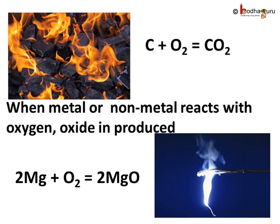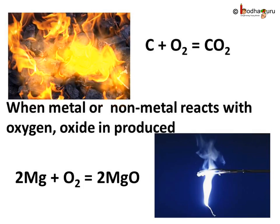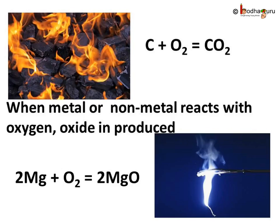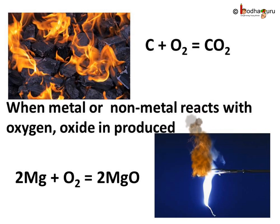Also, when we burn a piece of charcoal, carbon dioxide is produced. So carbon plus oxygen gives carbon dioxide: C + O₂ = CO₂. If we burn a magnesium wire in air, magnesium oxide is produced. Magnesium plus oxygen gives magnesium oxide: 2Mg + O₂ = 2MgO.